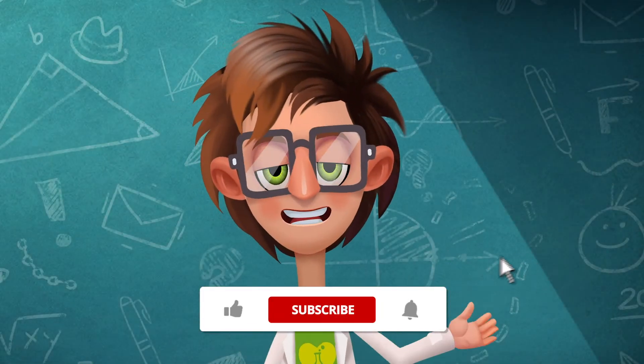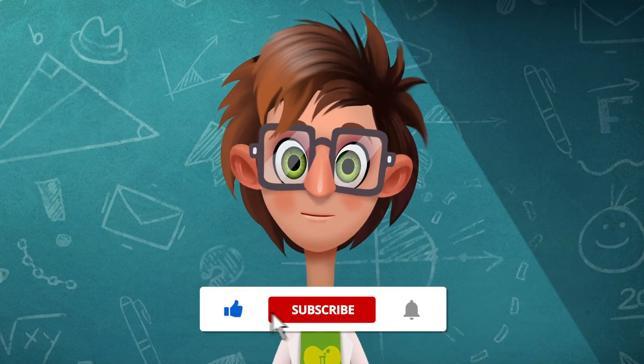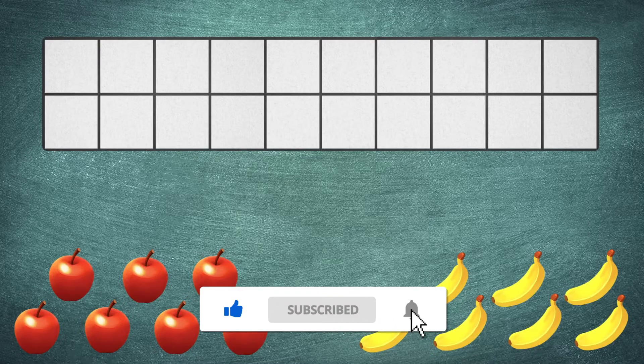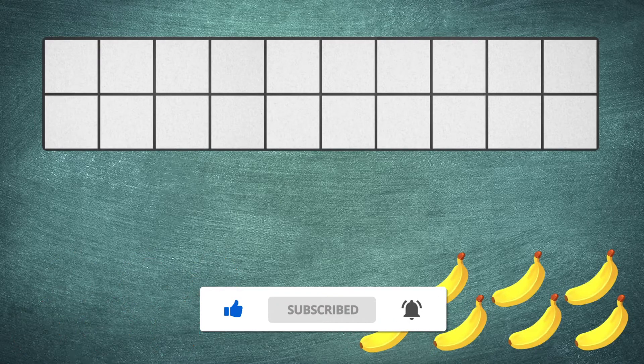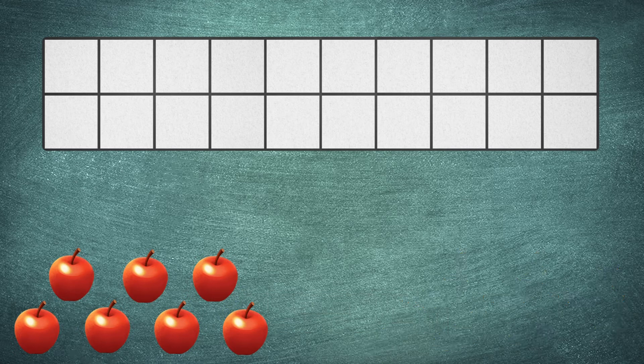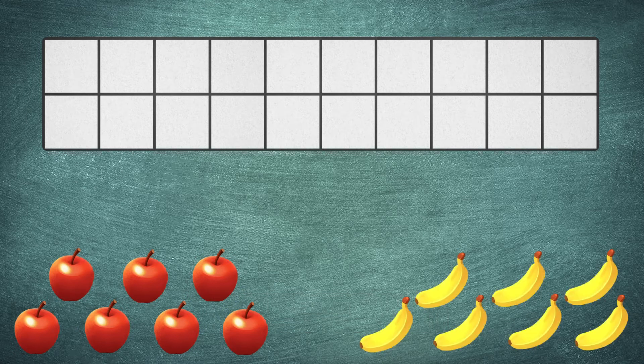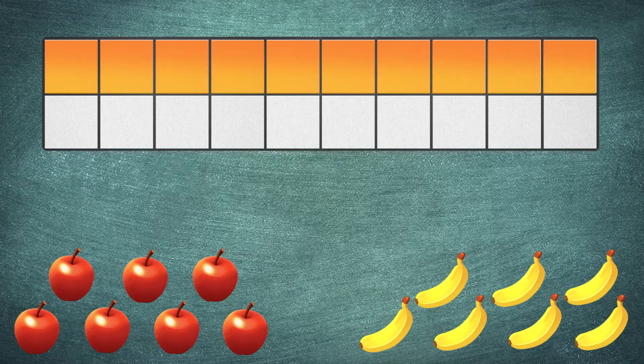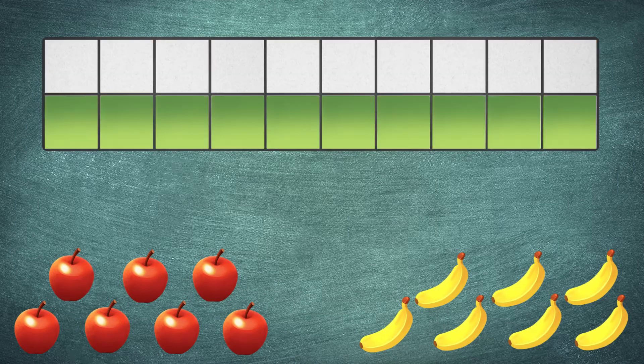Let's compare numbers. Let's count these apples and bananas by placing them in two rows — one for the apples, one for the bananas.